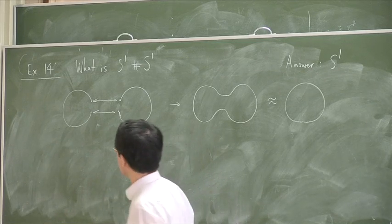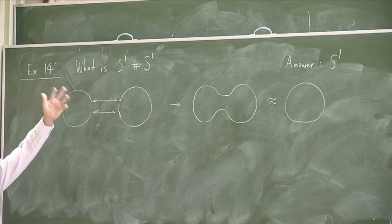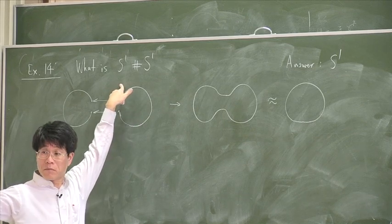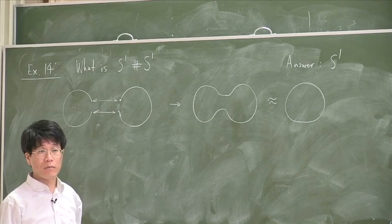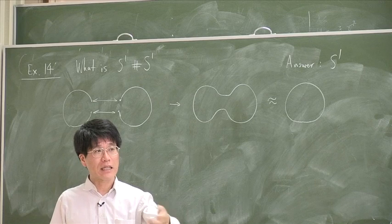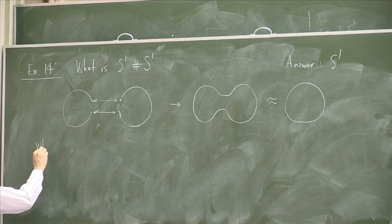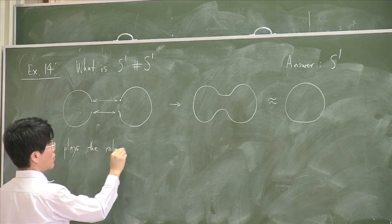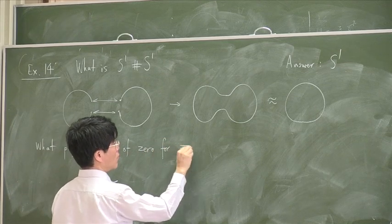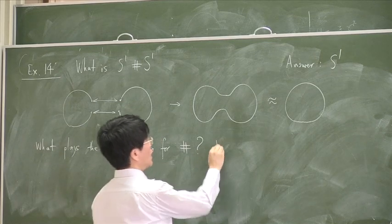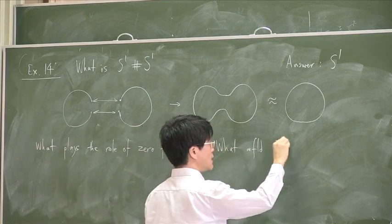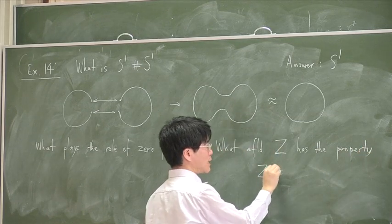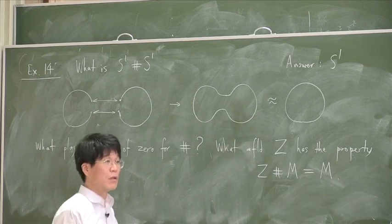This is quite easy, but it's a little surprising. We were perhaps expecting that we get something new by connecting S¹ and S¹. So in a way, S¹, in this case, behaved like 0. 0 plus 0 is 0. For no other number do you have the property that that number plus that number is the same number. So here's an interesting question. What plays the role of 0 for the operation of connected sum?